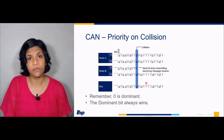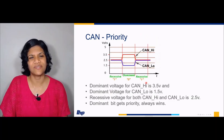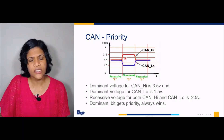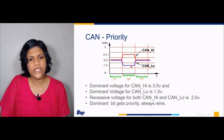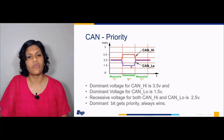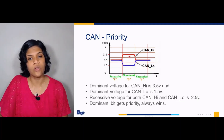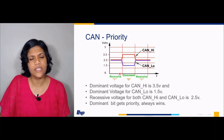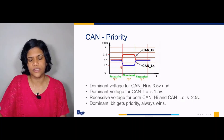Zero is the dominant bit and it always wins. In the dominant state, CAN high has a voltage of 3.5 volts and CAN low has a voltage of 1.5 volts, which together makes 5 volts. In the recessive state, both of them will have a voltage of 2.5 volts.